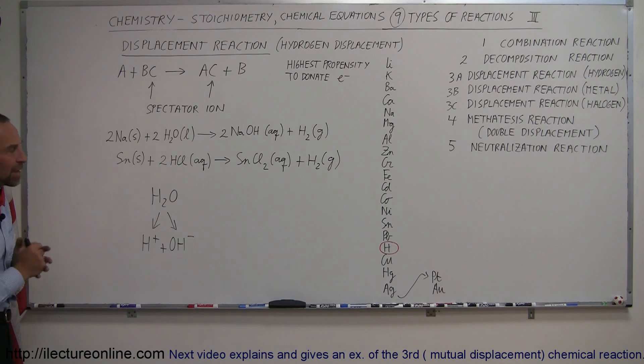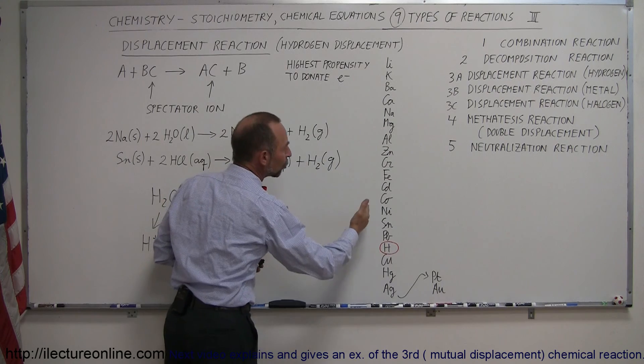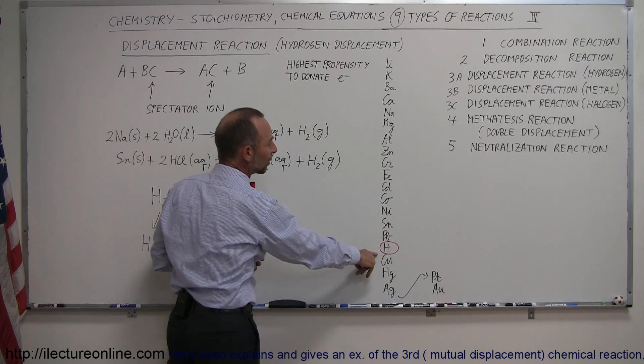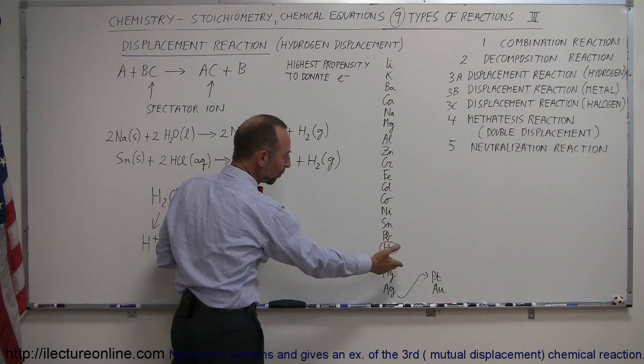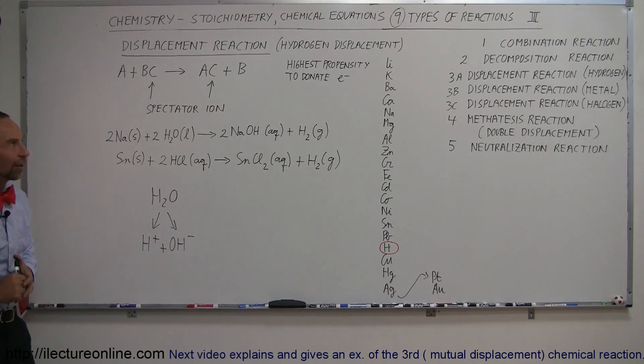And thus, so that's what we mean by the activity series. It simply gives you a relative position of the elements that will be able to drive out the hydrogen atom, or the hydrogen ion, from the water, and give it the electron so it can bubble out in the form of hydrogen.